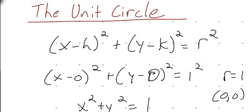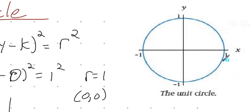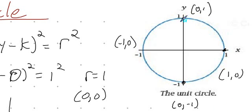The unit circle is going to help us set the table for our trig and some of our trigonometric functions we'll be dealing with later, so we need to get comfortable with the unit circle. Here you can see the unit circle with radius one, and we need to know some special properties. The endpoints are at (1, 0), (0, 1), (-1, 0), and (0, -1) — these are the endpoints around the unit circle because we have a radius of one.